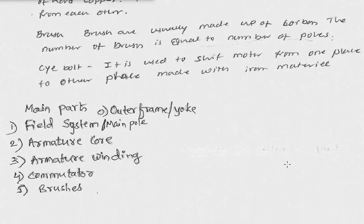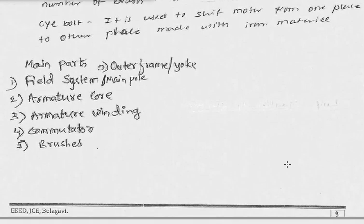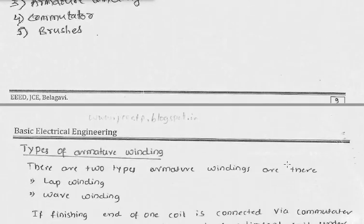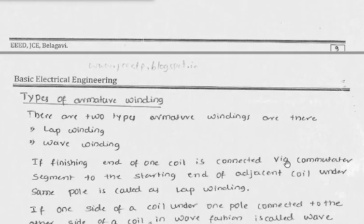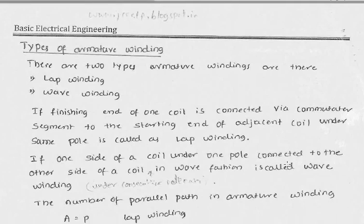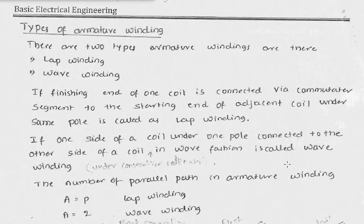This is the construction of the DC generator. On top of the armature, in the outer slots, we have the armature winding. Based on how the winding is done, there are two types of armature winding: one is called lap winding and the second is called wave winding. Based on these two types, a different number of parallel paths are created in the armature winding.